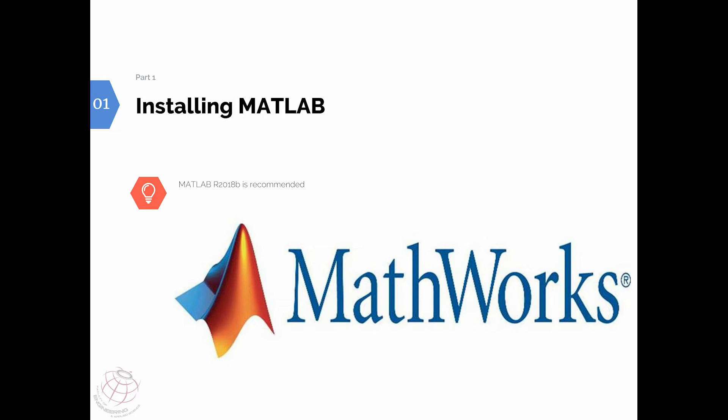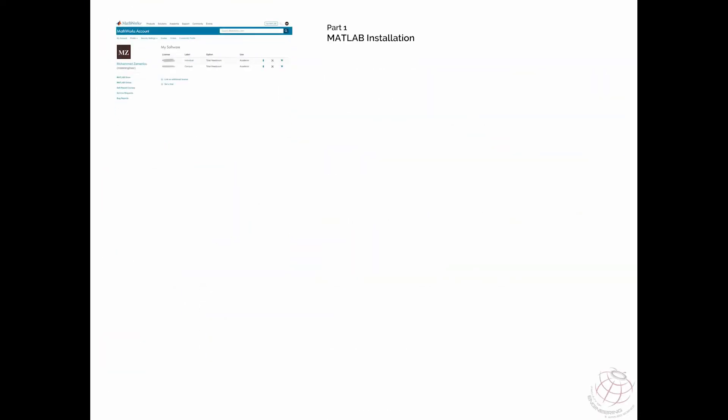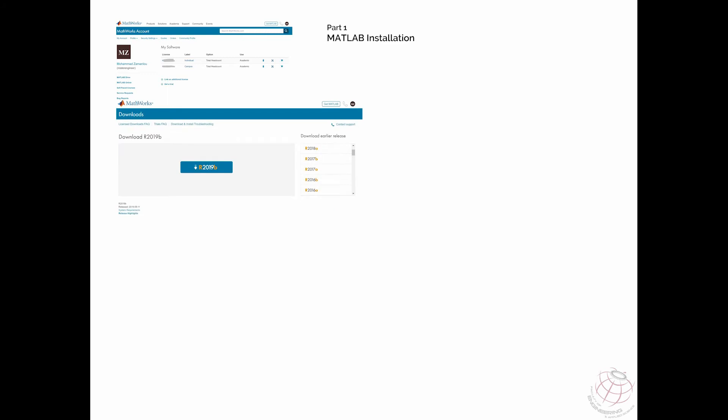First and foremost, installing MATLAB. For this product it is recommended by the Quanser website that you install MATLAB 2018B, because I'm installing Quark 2018 — even though I'm currently in 2019. To install 2018B, first log in to your MathWorks account. Once logged in, you'll see licenses depending on what your university provides. Click on one and you'll see the version selection page. Select 2018B and an installer link will be given to you. Download it and go through the installation.